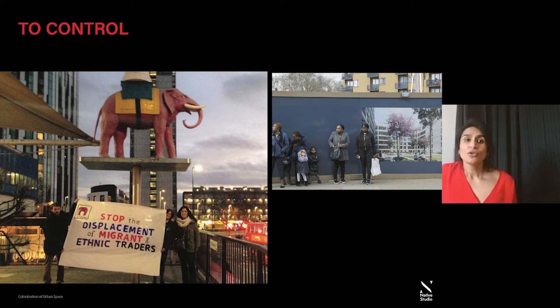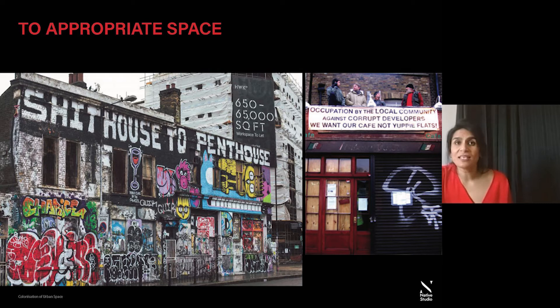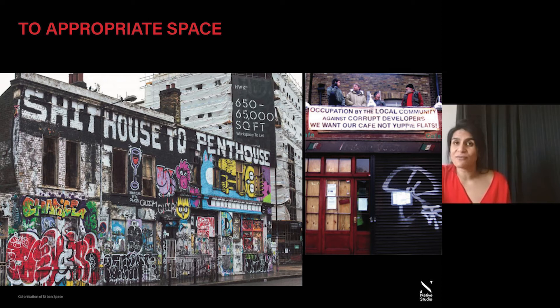To control: changing the makeup of an area by pushing groups out and installing organisations that those not from the locality benefit from. For example, the tenants of Elephant and Castle Shopping Centre were moved out and displaced by larger organisations to make way for a very different demographic. To appropriate space for one's own use: in this example in Hackney Wick, you can see how the existing buildings have been appropriated for workspace that can now be sold and rented for financial gain — workspace to let — rather than the original affordable workspace appropriate to the people already present there. Or another example where a popular café was removed in place of homes to financially benefit developers.